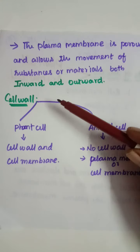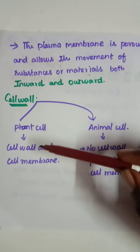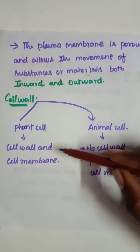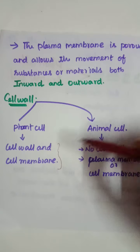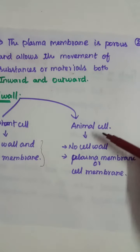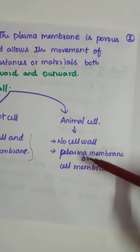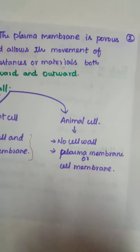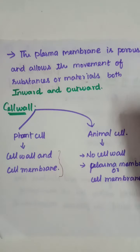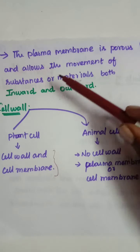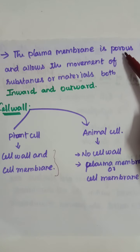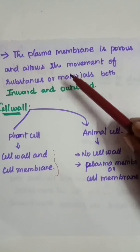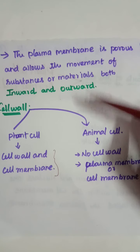The cell wall is present in the plant cell. The plant cell has both a cell wall and a cell membrane, so it is very protective. The animal cell does not have a cell wall — it only has the plasma membrane or cell membrane. The cell membrane is porous, and through the pores, substances or materials move inward and outward.